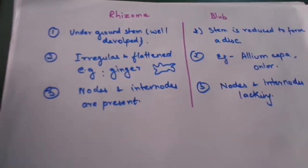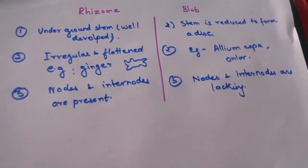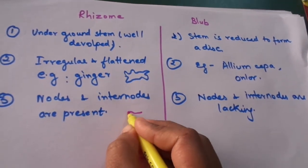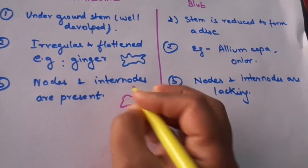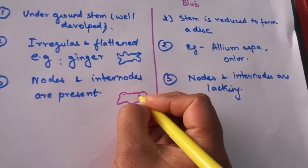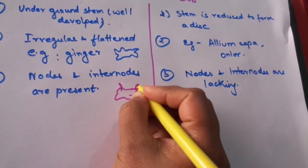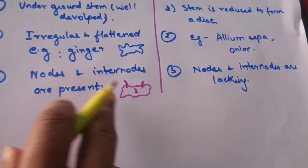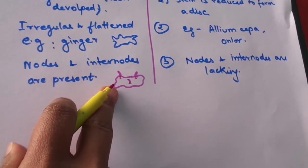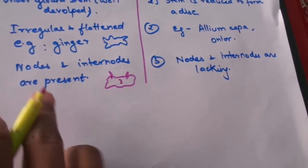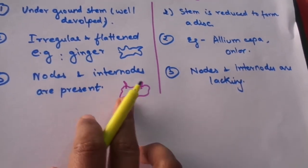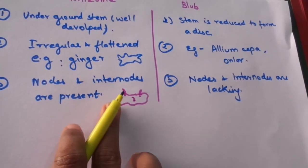Just a brief, as we all know what are the nodes and the internodes. But just for the presentation view. So, this is a ginger. You can see that there are some eye-like structures formed from where a new growth takes place. These structures are called as nodes and internodes. These are present in the case of rhizome. We can easily see that in the case of ginger. And in bulb, such nodes are lacking. A new plant can be grown from these nodes and internodes.